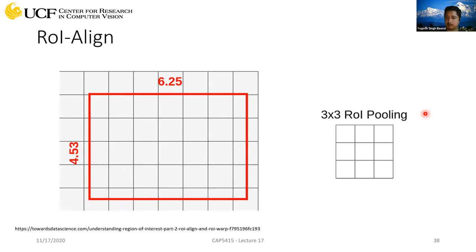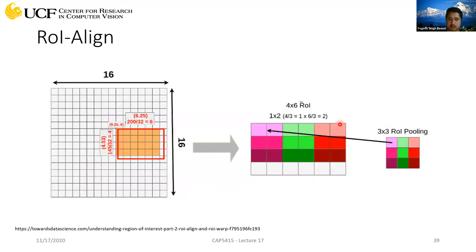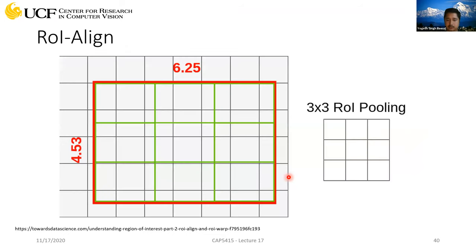Let's say our target resolution for extracting features is 3x3. If you did 3x3 ROI pooling, you were losing this information. But with ROI Align, we won't have to do that.